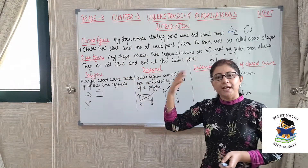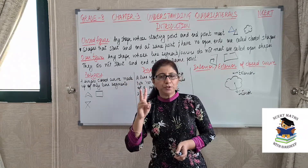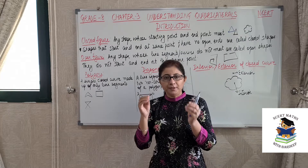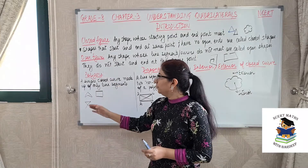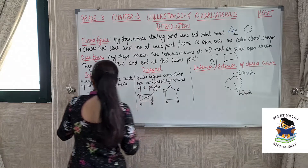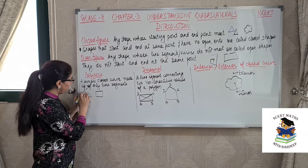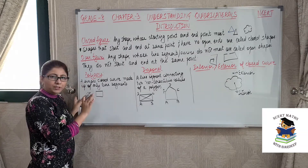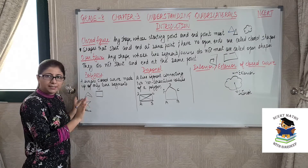Closed figures or open figures can be made up of line segments or curves. But for polygons, two conditions are there: first it should be a closed figure, and second it should be made up of line segments — there should be no curves included in the polygon. For example, if this shape starts from this point and goes around and ends at the same point, this is a polygon because its starting and ending point are same and it is made up of line segments.